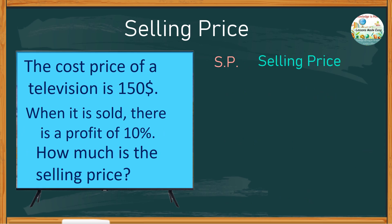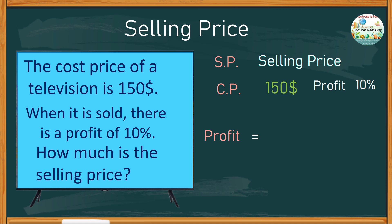Let's try another method for the same problem. The cost price is 150 dollars at 10% profit. To solve for the selling price, we first find how much is 10 percent of 150. Since percent means over 100, 10 percent can be expressed as 10 over 100.